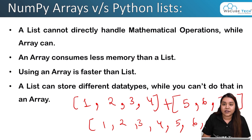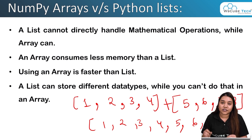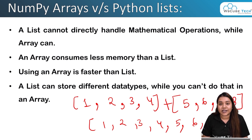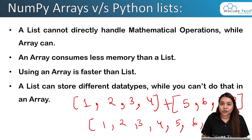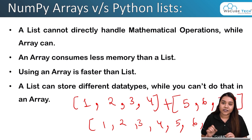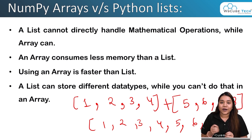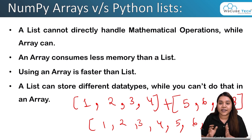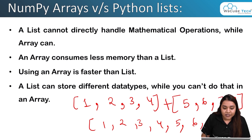An array consumes less memory than a list. As discussed in our previous session, arrays are stored in contiguous memory, while lists get stored in non-contiguous memory — meaning a list goes into different memory allocations wherever space is found, while an array finds one place where it can store everything at once.